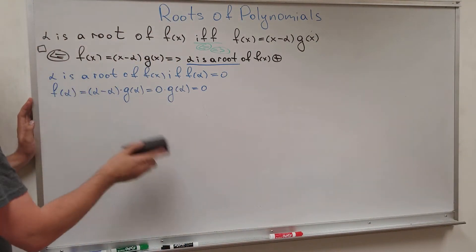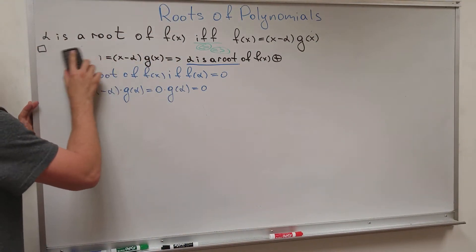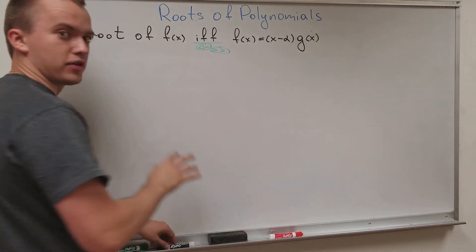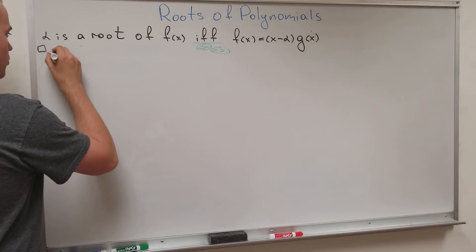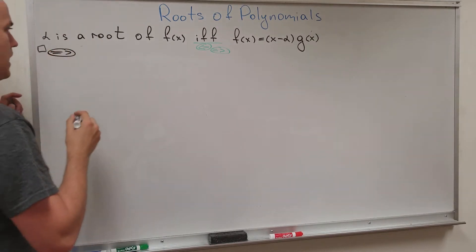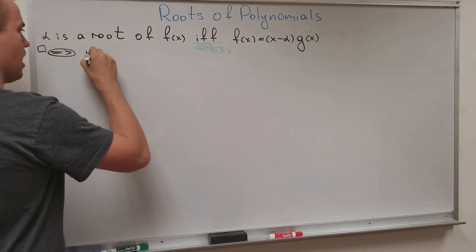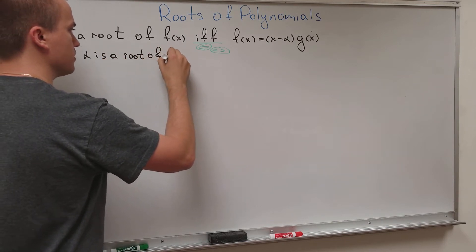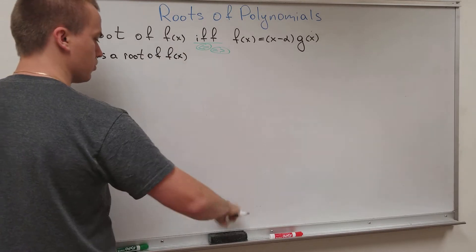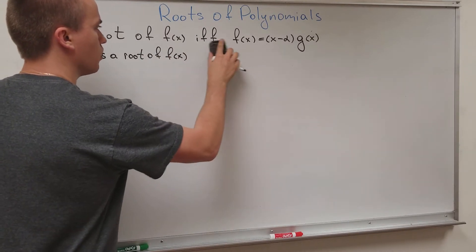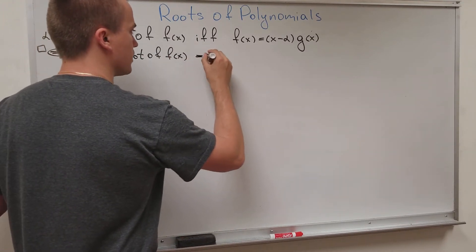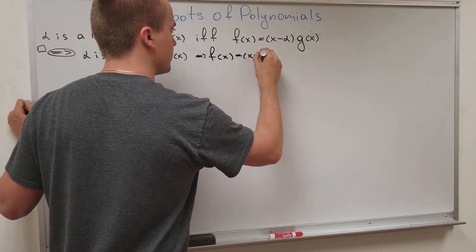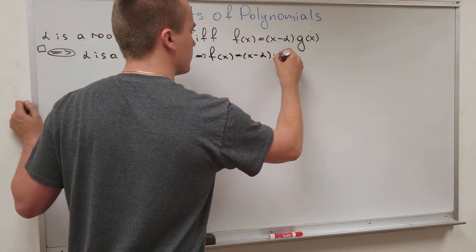I'm going to erase this to make space for the necessary condition proof — and this is actually my favorite part. I want to prove this direction: I have that alpha is a root of f(x), and I want to show that f(x) equals (x minus alpha) times g(x).